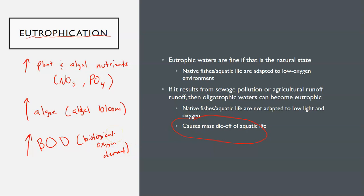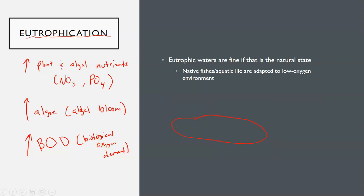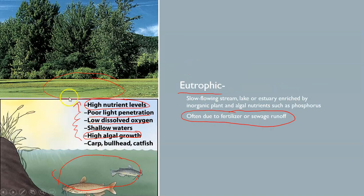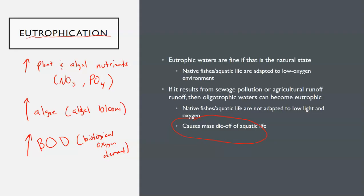As that algae blooms we get a big growth of algae. The algae is continuously reproducing, dying off, and decomposing. As that algae decomposes, the bacteria that decompose it use up the lion's share of oxygen available in that water. With a big increase in biological oxygen demand, we get a big decrease in dissolved oxygen.